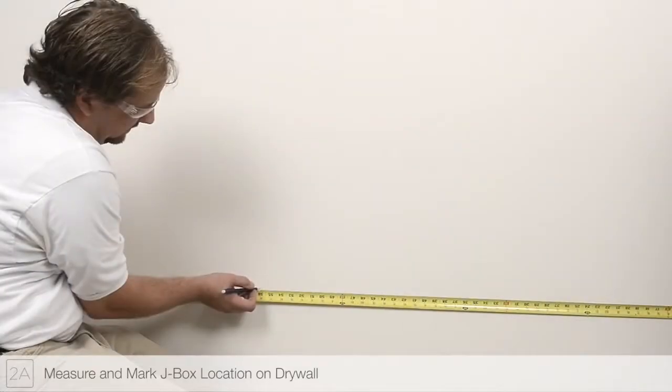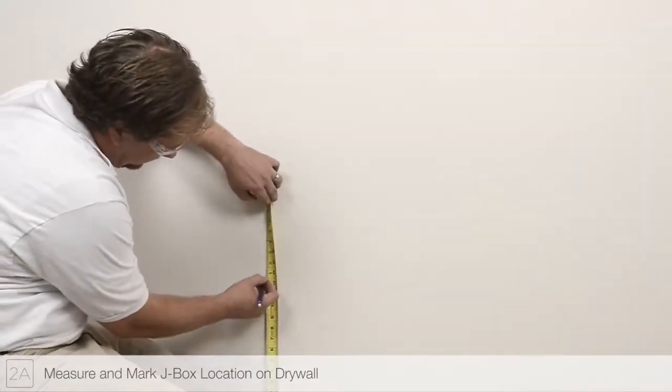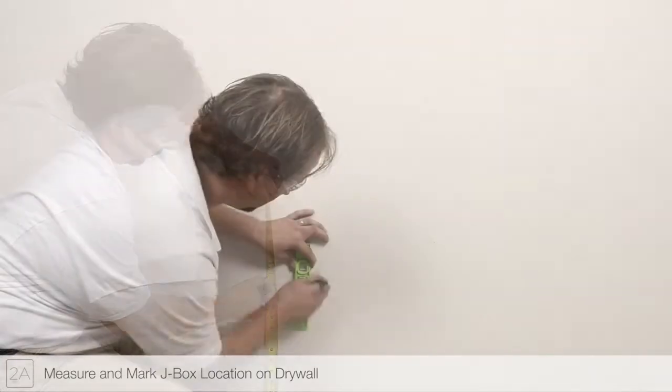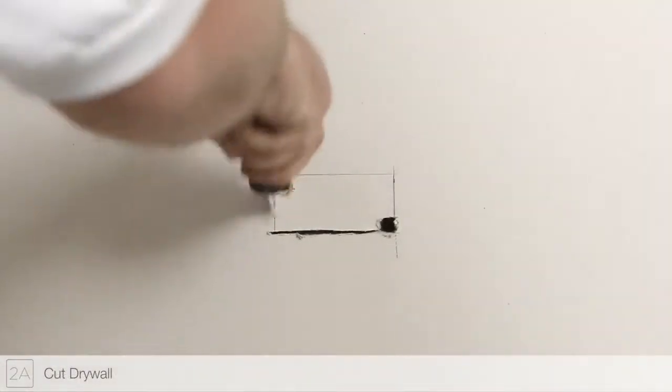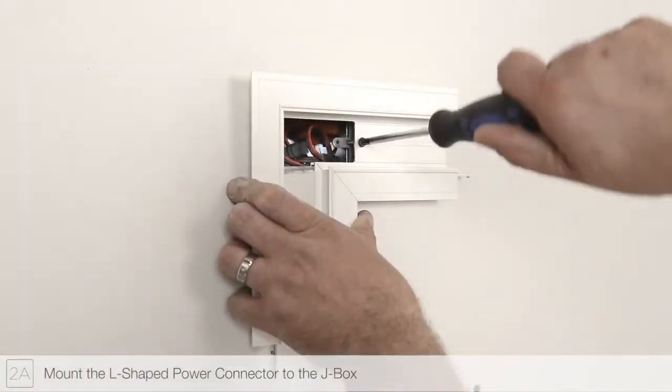Step 2A. Before drywall is installed, locate and mark the position of the power feed junction box using the measurements taken in previous steps. Cut the drywall using a jab saw or other appropriate tool to expose the junction box. Mount the L-shaped power connector to the junction box.